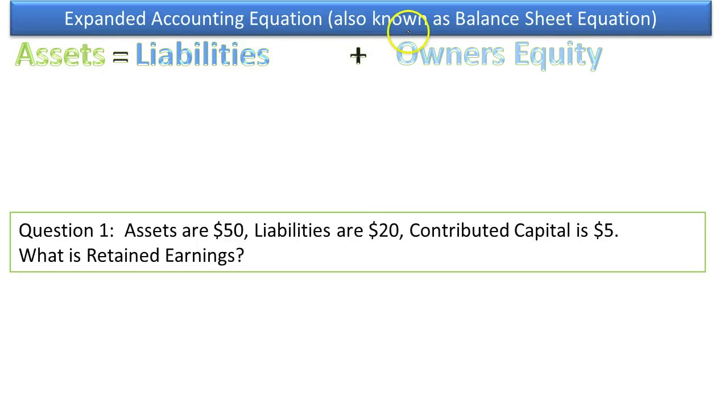The Expanded Accounting Equation. All we mean by expanded is we're going to take equity and expand it into its two component pieces. It is the contributed capital, that's the equity that the owners have given directly to the business by contributing it, and then we have retained earnings. These are all the profits that the company has made that have not been paid out to the owners in the form of a dividend. It's the earnings they've retained, the profit they've retained. So, the Expanded Accounting Equation is simply saying, expand the equity into the contributed equity and the earned equity.